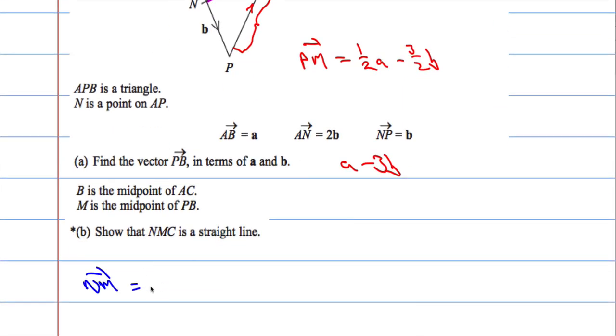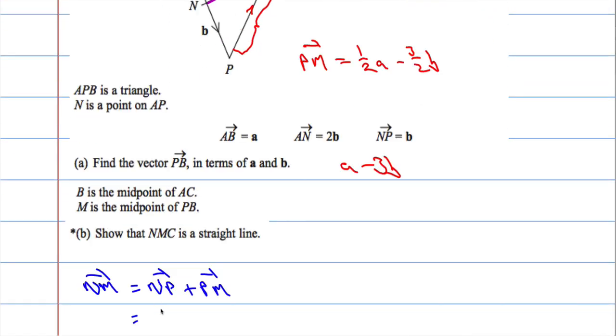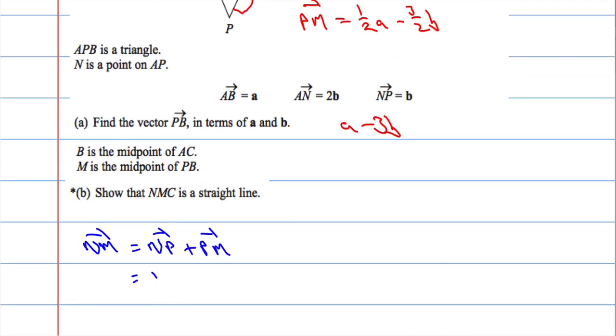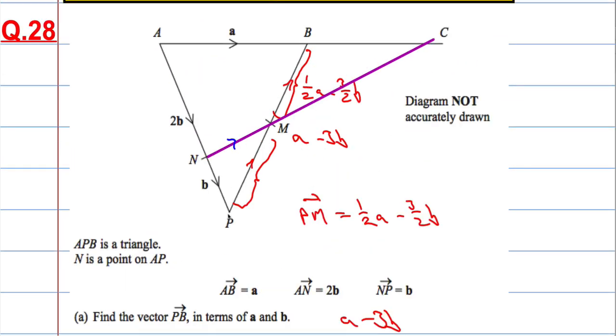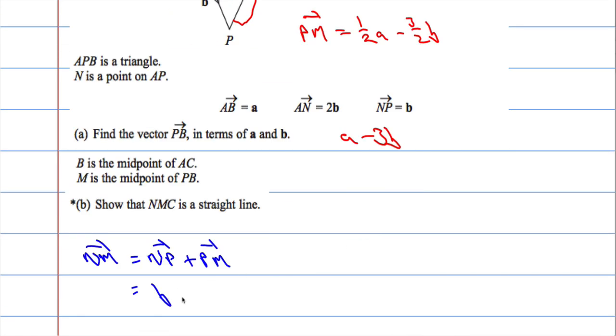So if I go from N to M, and then I go from P to M, that's the same. Now we know that NP is b, and the vector PM is a half a minus 3 over 2b. A half a minus 3 over 2b.